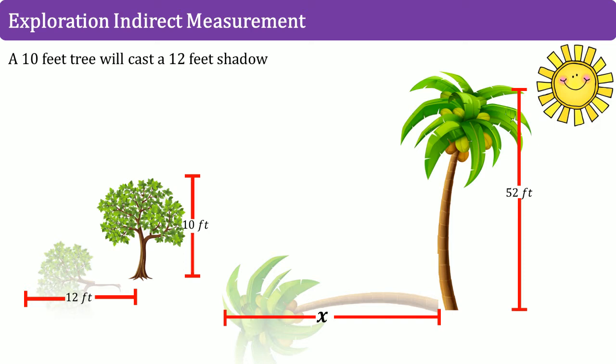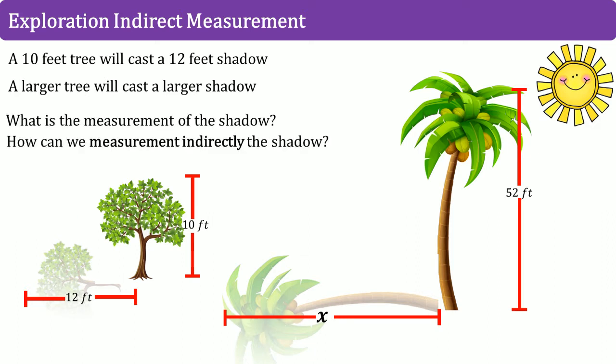Now you have a taller palm tree, and that palm tree is 52 feet tall. And the sun at the same time casts a shadow, but you do not know how long that shadow on that palm tree is. But you know that the larger tree will actually cast a larger shadow. But by how much? What is that measurement of that shadow? How can we measure that shadow indirectly? That's where the idea of indirect measurement comes from.